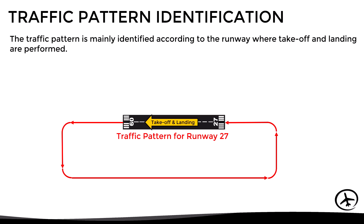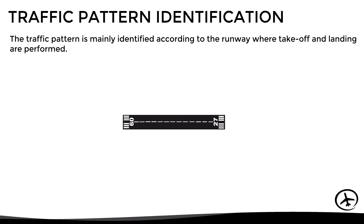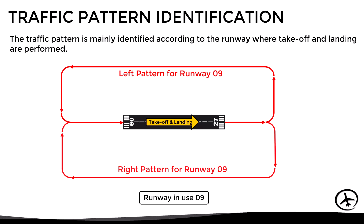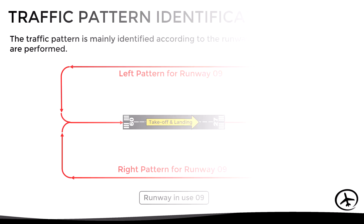We also have to say that for a particular runway in use we can fly two different patterns: one making all the turns to the left, or the other one making them all to the right. However, we will look at this later on — let's focus first on the different legs or segments of the pattern.